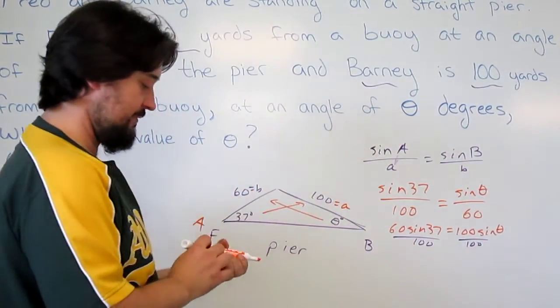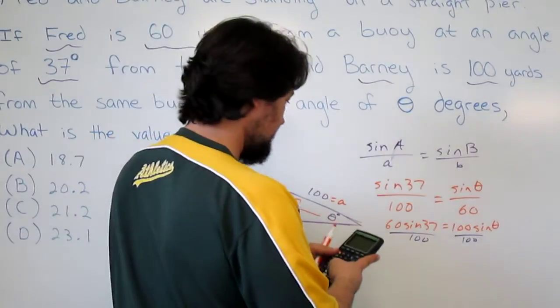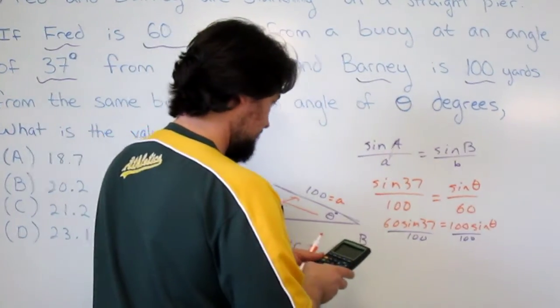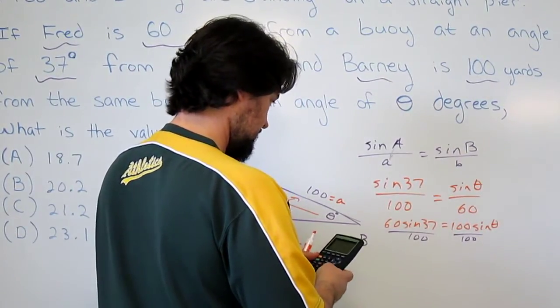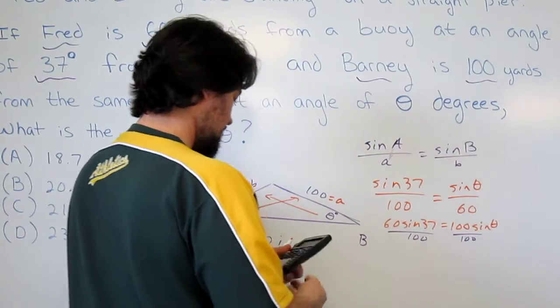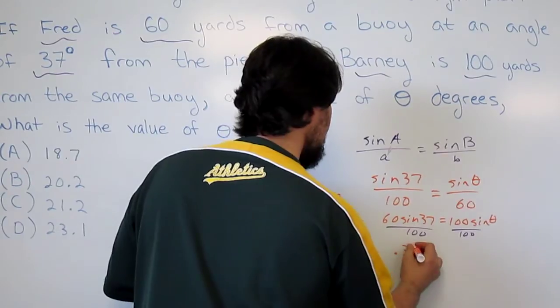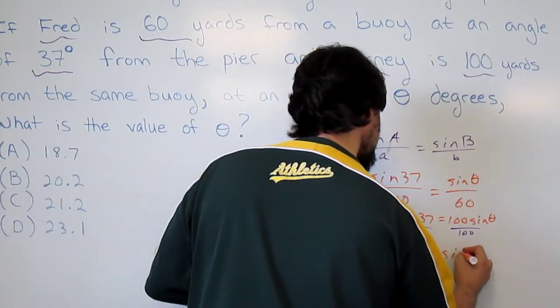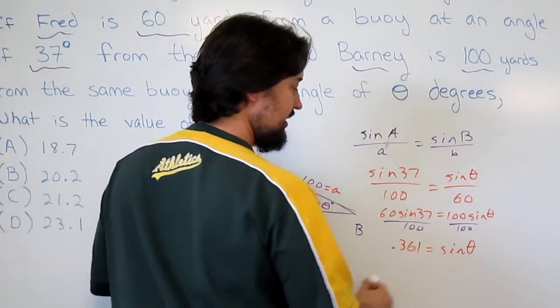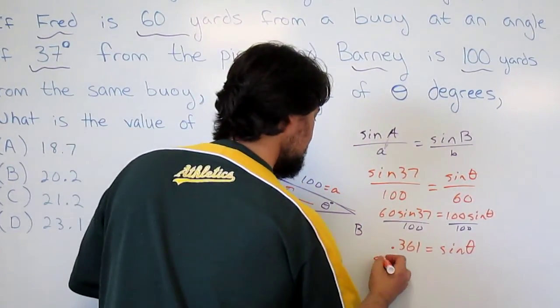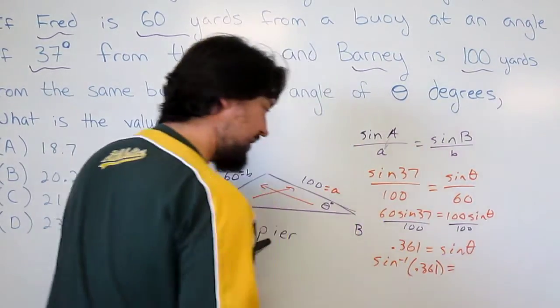Now what we have is an inverse sine idea. Let's go ahead and clean this up so far. Make sure you're in the right mode. All right, so we get something like 0.361 equals sine of theta. That represents the ratio. To get inside the angle, we need to do inverse sine on that. So sine inverse of 0.361 equals theta.